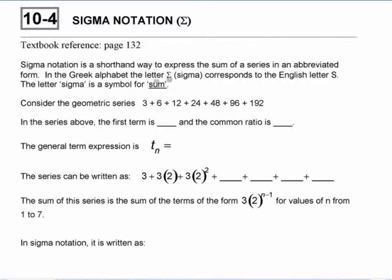Sigma is a Greek letter. It is a letter in the Greek alphabet that corresponds to the letter S in English. So at some point somebody decided to use that as a symbol to represent sum.